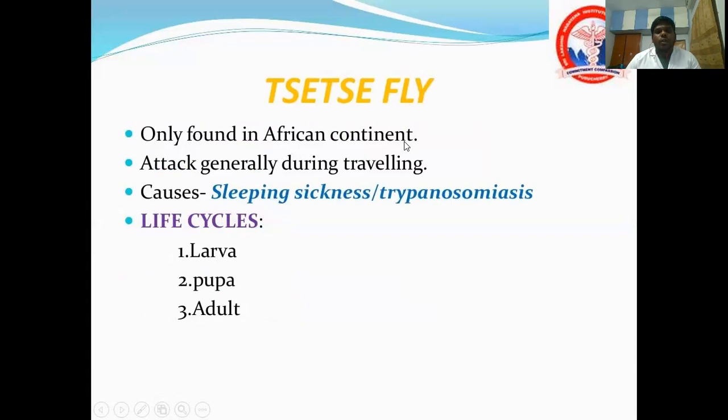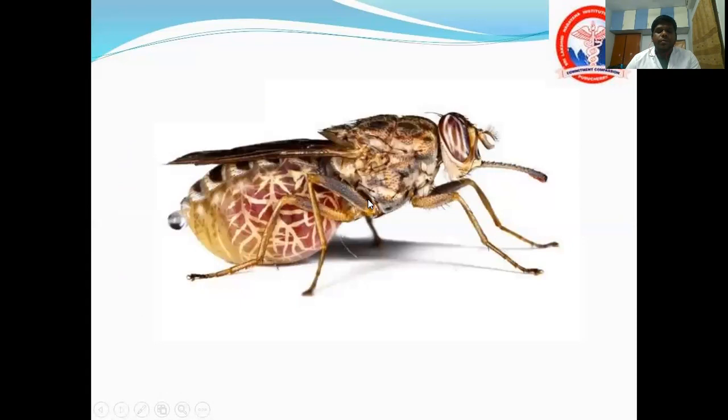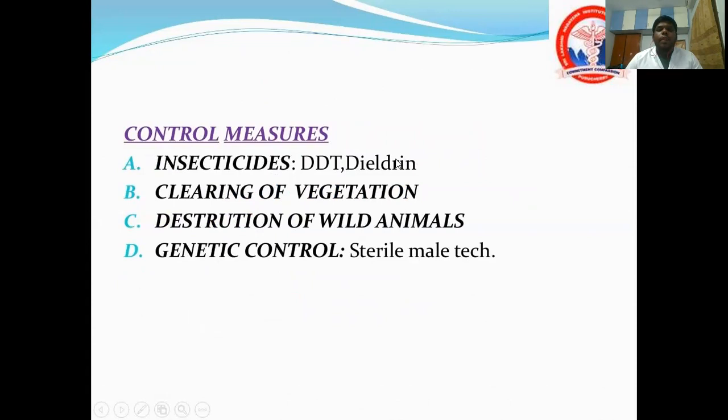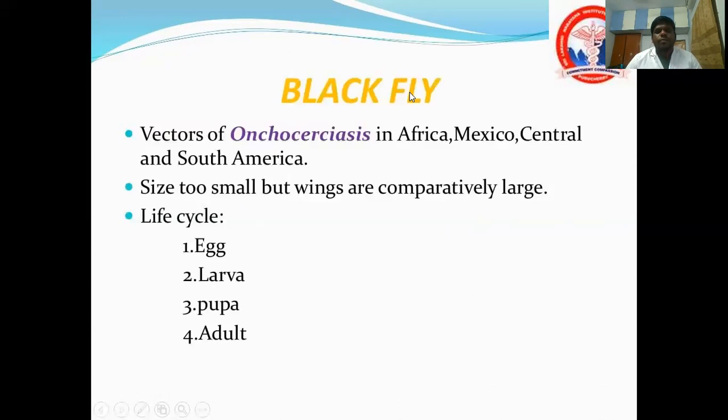Tsetse fly is found in the African continent and generally attacks travelers. It causes sleeping sickness or trypanosomiasis. Life cycle is: larva, pupa, and adult. Control measures include insecticides like DDT and pyrethroids, clearing vegetation, destruction of wild animal reservoirs, and genetic control by sterilizing males — which is still under research.